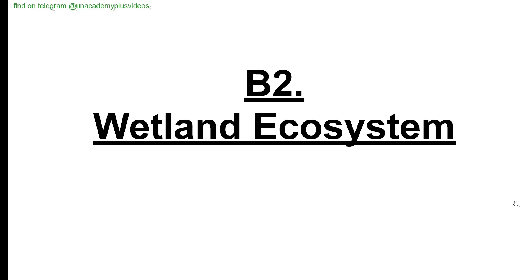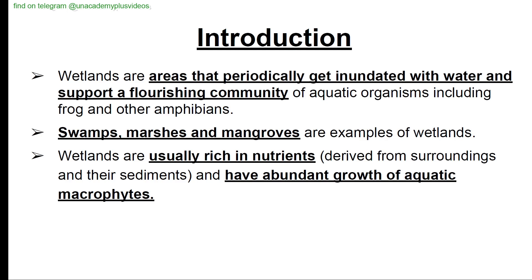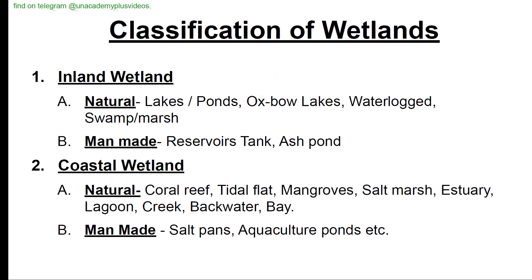Welcome to Premiere UPSC. Continuing with the environment, this is the third lecture of environment for prelims UPSC. Wetland ecosystems introduction: wetlands are areas that are periodically inundated with water and support a flourishing community of aquatic organisms including frogs and other amphibians. Swamps, marshes and mangroves are examples of wetlands. Wetlands are usually rich in nutrients derived from surroundings, their sediments, and have abundant growth of aquatic species.